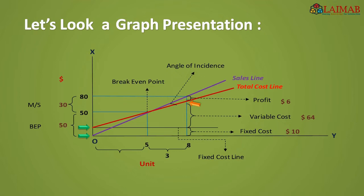Sales starting point is $0 at 0 units sold, and at 8 units sold, total sales are $80. At 5 units sold, total revenue equals total cost — this is the breakeven point. The profit or loss at any sales level can be determined by the vertical distance between the two lines. For quantities fewer than 5 units sold, total cost exceeds total revenue, and the yellow area indicates losses. For quantities greater than 5 units sold, total revenues exceed total cost, and the green area indicates profits. This creates an angle called the angle of incidence, which starts at the margin of safety area.